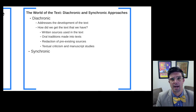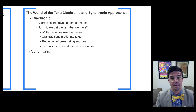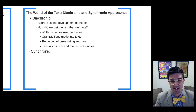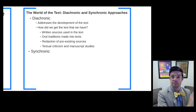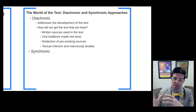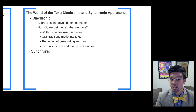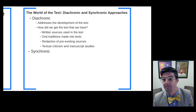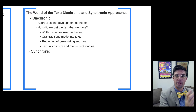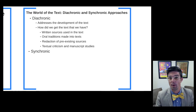The last element under diachronic approaches is textual criticism and manuscript studies — thinking about the different versions of any given text, whether Romans, the Gospel of John, Revelation, or the Gospel of Mark. What are the different textual versions from the ancient world in different manuscript forms, and how do those manuscripts relate to one another? Textual criticism thinks about those manuscripts that stand behind the text we have, either in a Greek reconstruction or in an English translation. Diachronic approaches are really about the literary development of the text and how it came to be.